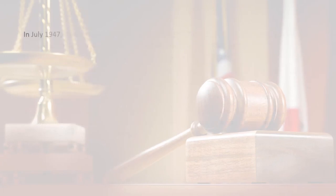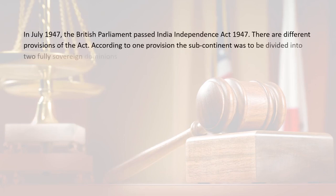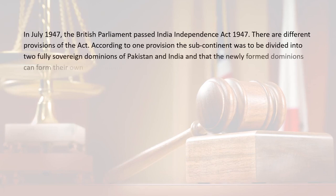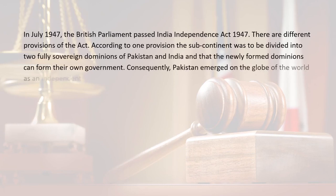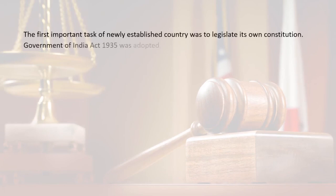In July 1947, the British Parliament passed the India Independence Act 1947. According to one provision, the subcontinent was to be divided into two fully sovereign dominions of Pakistan and India, and the newly formed dominions could form their own government. Consequently, Pakistan emerged on the globe as an independent country.